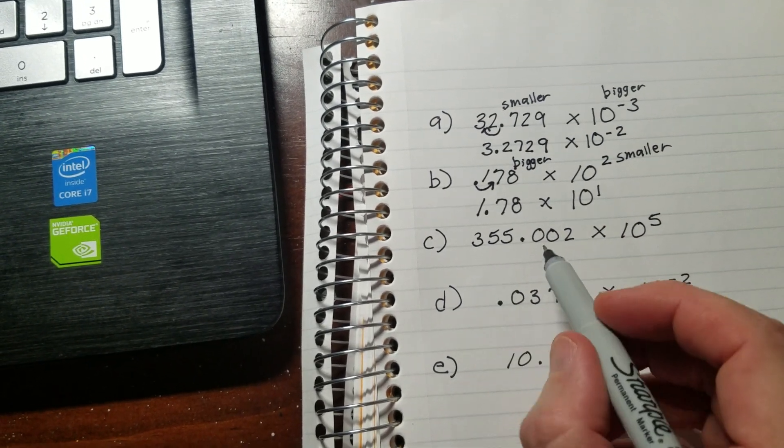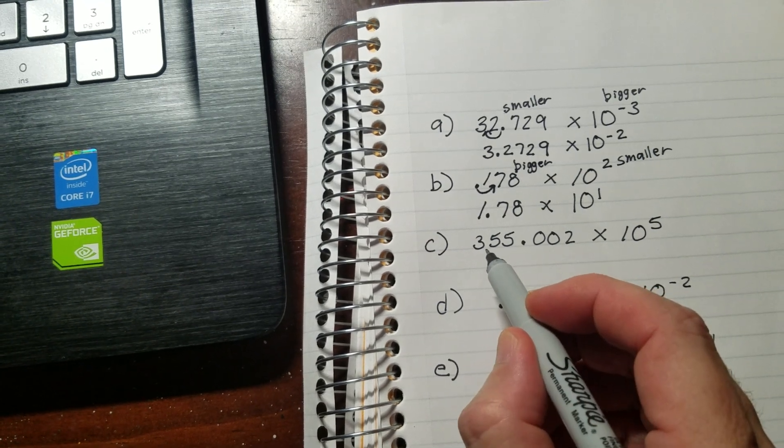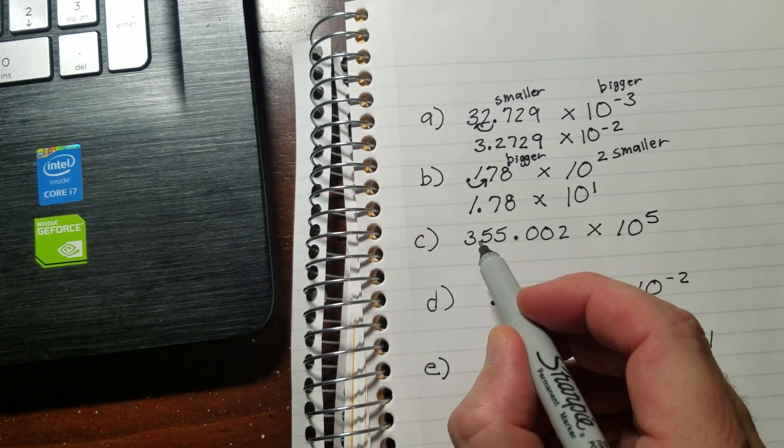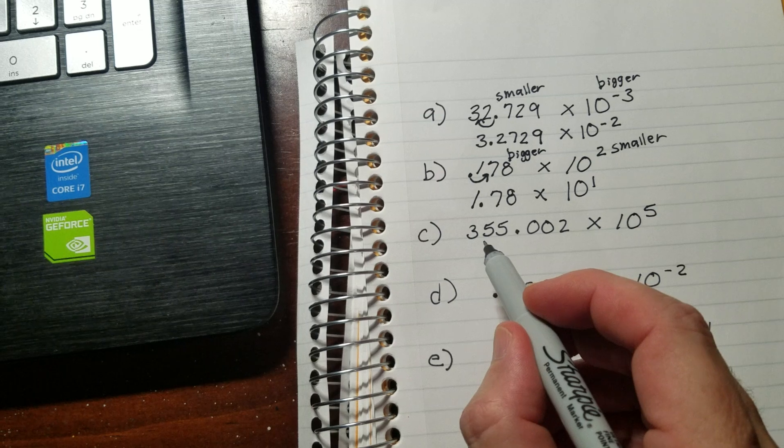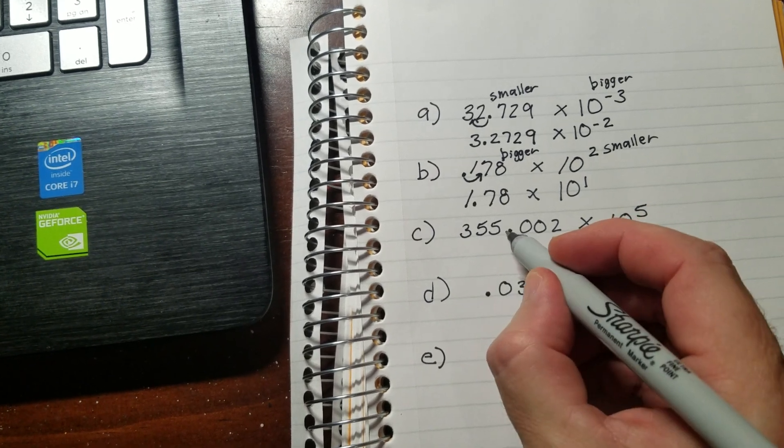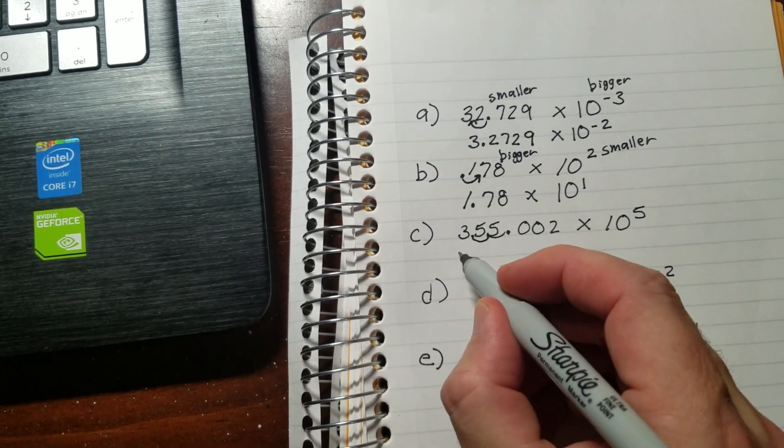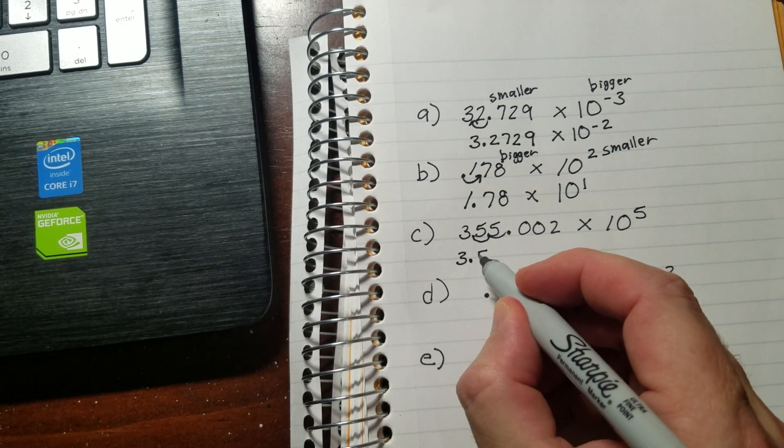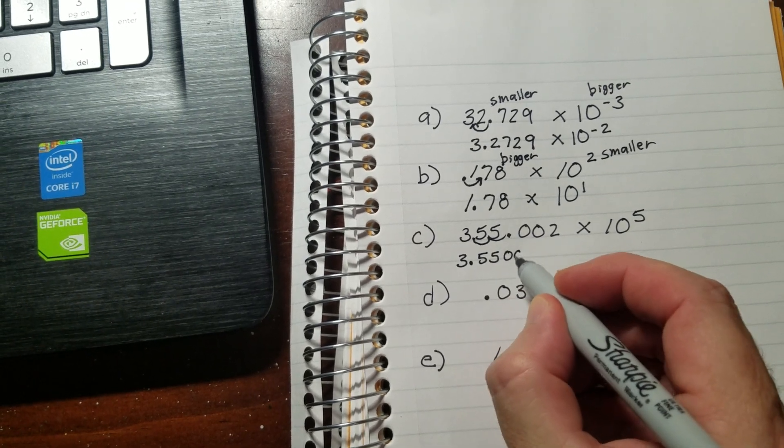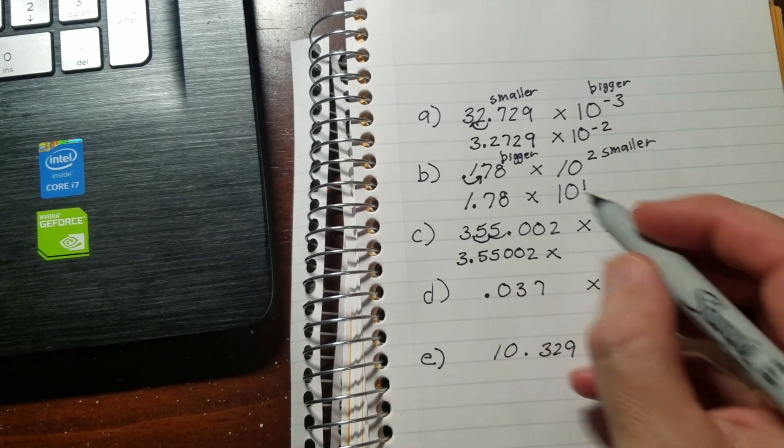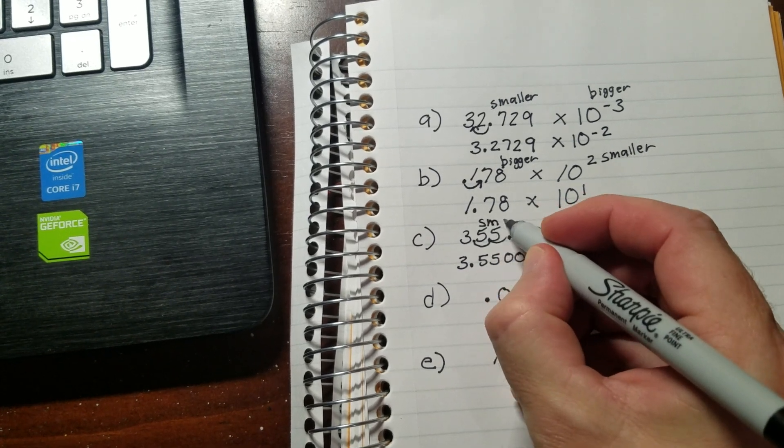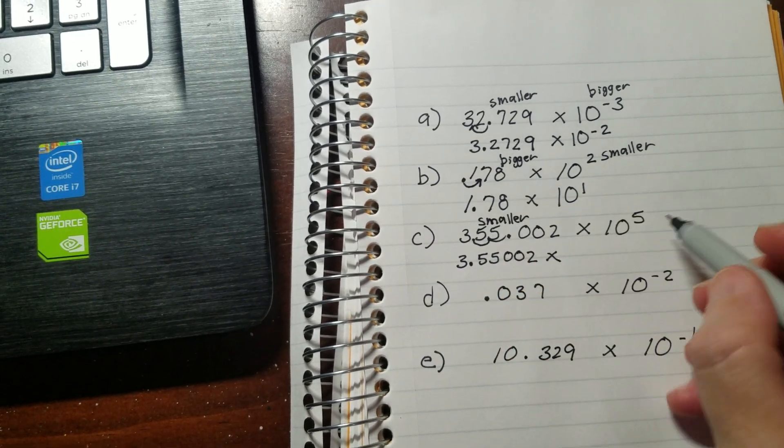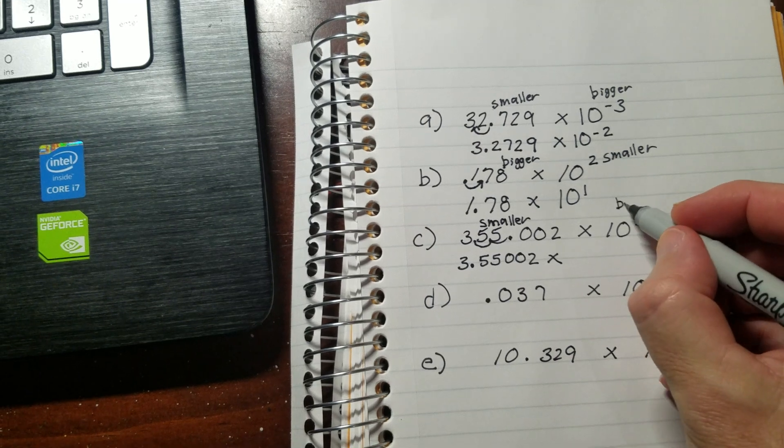And then I have this one over here. So this is actually, the decimal needs to move over here to where the 3 is, because it's 355 right now. So I'm going to move it 1, 2, making this number into 3.55002 times. So when I did that, I made this number smaller, which means that this one's going to have to become bigger.